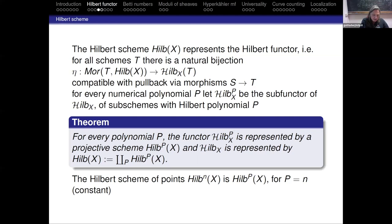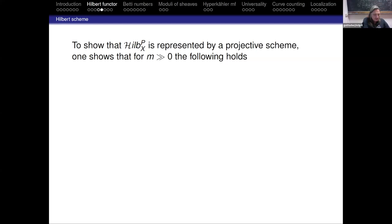The Hilbert scheme of n points, Hilb^n(X), is just one part of this Hilbert scheme — namely the component with the constant polynomial p = n. We had seen that for a set of n points, the Hilbert polynomial is the constant n. This is a somewhat surprising and mysterious fact — to say something is represented by a projective scheme means you find a scheme lying in some projective space that represents this functor.